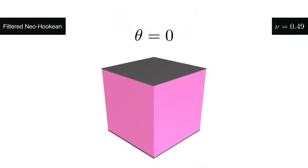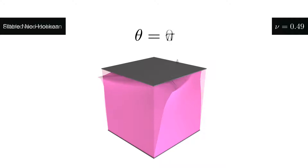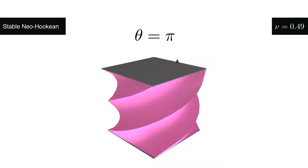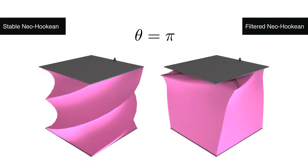Other variants of Neohookian elasticity typically introduce new user-facing parameters, and failure to correctly set these parameters can lead to simulation artifacts. Our model only contains two physical parameters that directly control the look of the simulation. The net result is a simulation that is both easy to control and artifact-free.